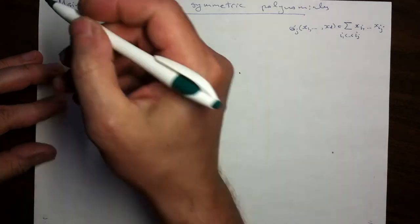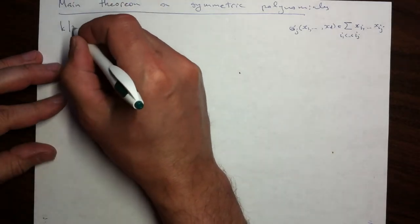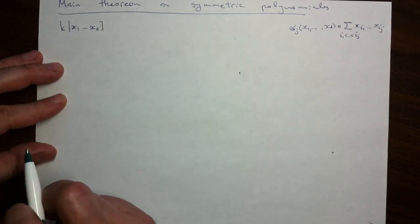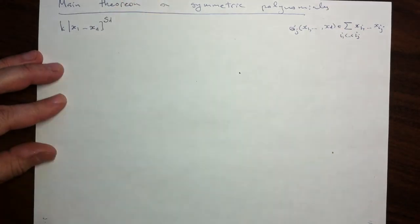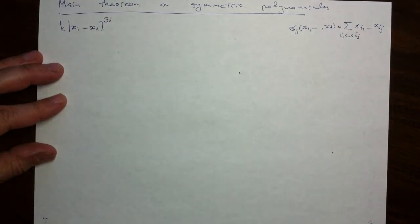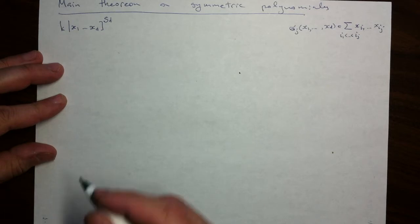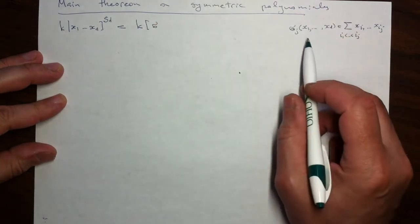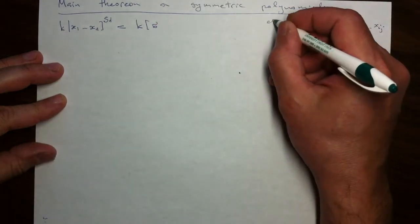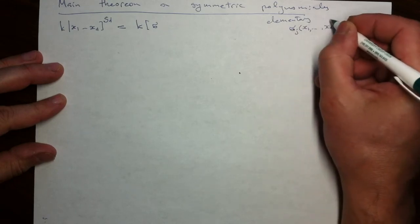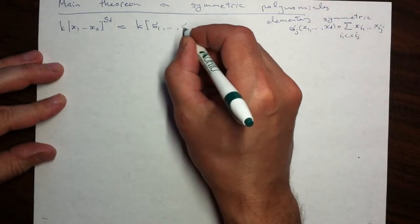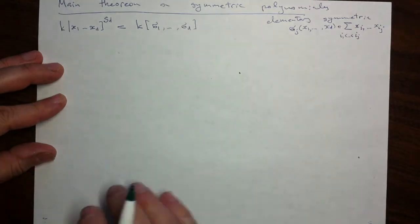The main theorem says that any polynomial which is insensitive to a change in the order of its variables — this is the standard notation for the collection of all such polynomials — they form a ring: closed under addition, multiplication, and subtraction. The statement is that any such polynomial is uniquely a polynomial expression in the elementary symmetric polynomials, which I call σ1 up to σd. There are d of them, as many as the variables.